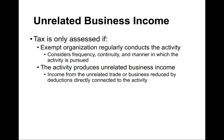Unrelated business income tax is only assessed if the exempt organization regularly conducts the activity — based on frequency, continuity, and the manner in which the activity is pursued — and the activity produces unrelated business income. In my university parking example, the situation happens every year because the race happens every spring, and the university makes quite a bit of money from an activity unrelated to its educational purpose.